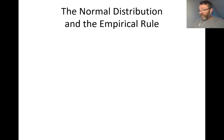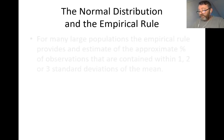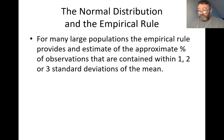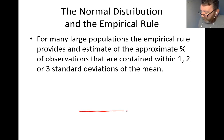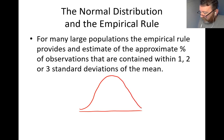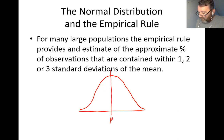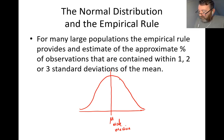The normal distribution and the empirical rule. The empirical rule provides an estimate of the approximate percentage of observations contained within one, two, or three standard deviations of the mean for large populations. For a normal distribution, the three M's — mean, mode, and median — all coincide in the middle. Outside of that, we have one, two, and three standard deviations on either side.